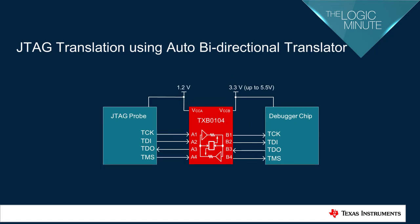When board space is critical, or if level translation up to 5.5 volts is desired, an auto bi-directional level translation device can be used, which offers the flexibility for level translation without the need for separate direction control pins. The TXB0104 shown here provides low DC drive strength, making it suitable to interface between any two high input impedance channels.